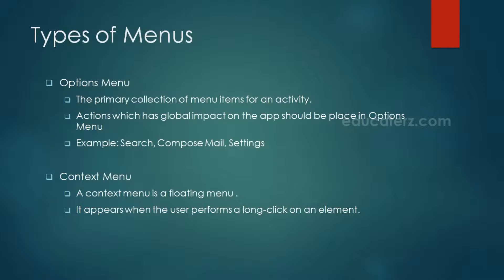Context menu is something like a right-click in your desktop application, but we do not have a right-click on mobile. So this is a floating menu which appears when the user performs a long click on any element — that pops up your context menu.